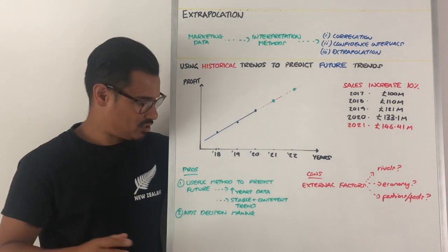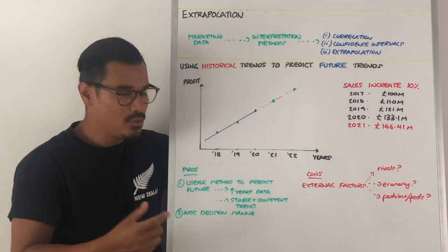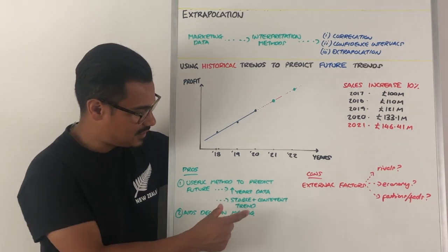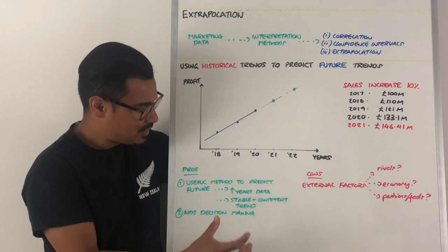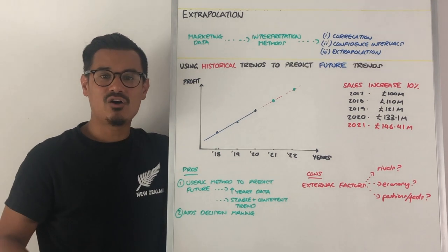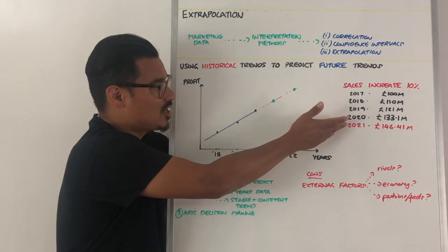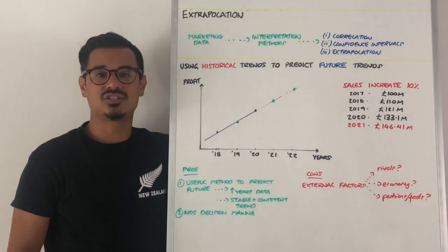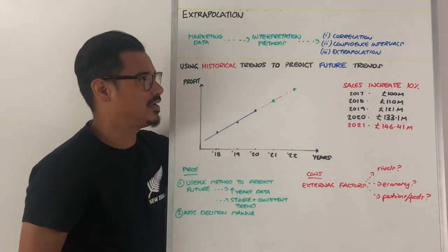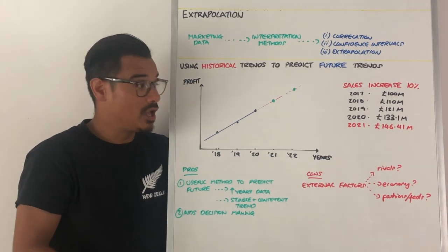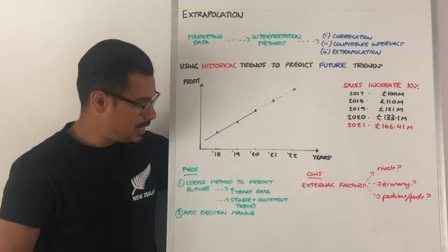Now the general pros of extrapolation: it's a useful method to help predict the future, as we've seen. It's going to be more effective if you have more years of data, and also the trend itself is stable and consistent. This is an example of a perfectly stable and consistent trend, so you may be prudent in your decision making to use extrapolation.